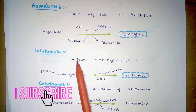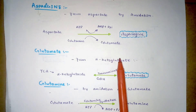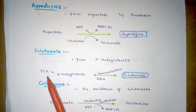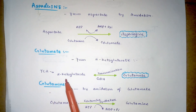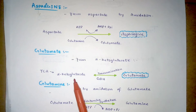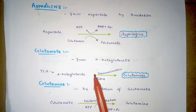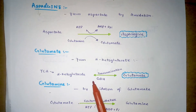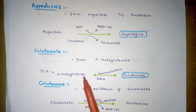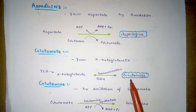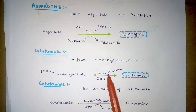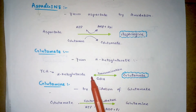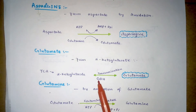Glutamate is derived from alpha-ketoglutarate by a transamination reaction. Alpha-ketoglutarate is an intermediate of the TCA cycle. The glutamate dehydrogenase enzyme catalyzes this reaction, converting alpha-ketoglutarate to glutamate. This is a transamination reaction by which alpha-ketoglutarate is converted to glutamate through the catalysis of glutamate dehydrogenase.